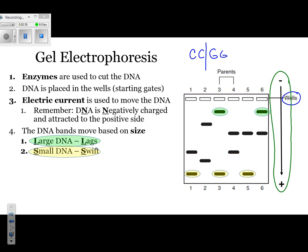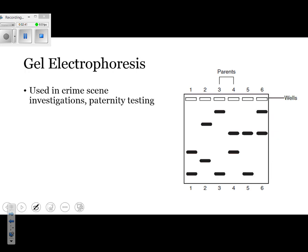Why would we use a technique like this? The reason why we use gel electrophoresis could be for a crime scene investigation, a paternity test, or medical testing. This example is a little different — it is looking at parents. That means that lanes 1, 2, 5, and 6 are supposed to represent potential children.